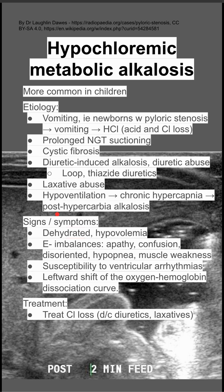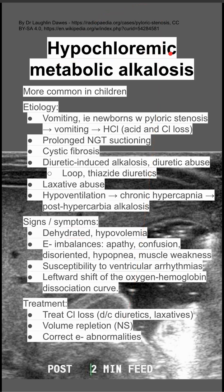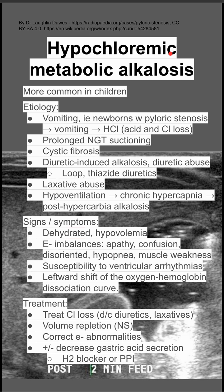To treat this, you want to address the chloride loss — stop any diuretics or laxatives the patient might be on. You want to do volume repletion, usually with normal saline to start, because they're hypochloremic and saline has that chloride ion. You also want to correct other electrolyte abnormalities and decrease gastric acid secretion in some cases, using an H2 blocker or a PPI.